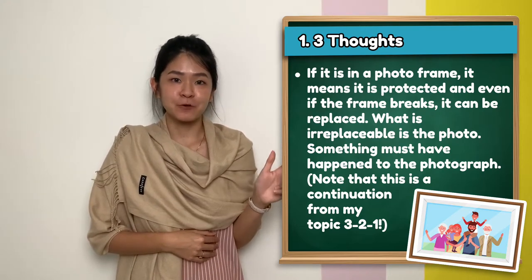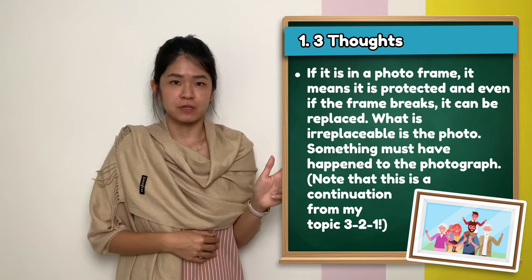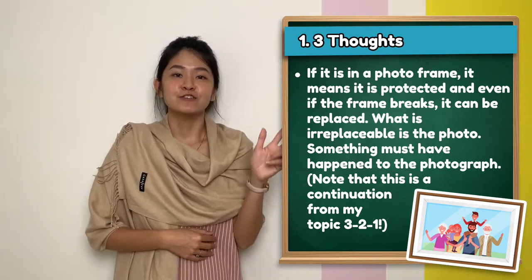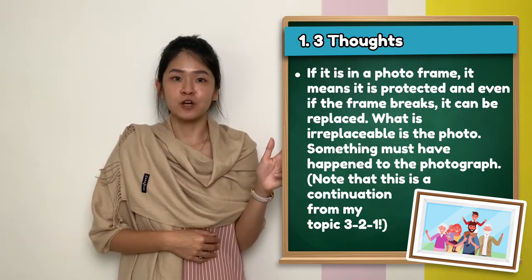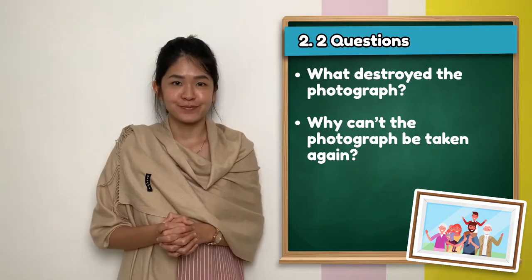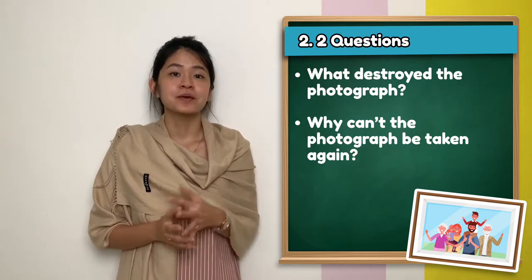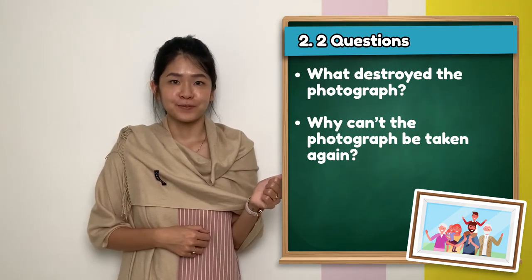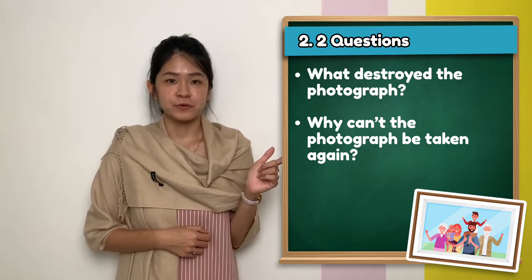What is irreplaceable is the photo. Something must have happened to the photograph. Note that this is a continuation from my topic 3-2-1. My two questions will be: what destroyed the photograph? Secondly, why can't the photograph be taken again?